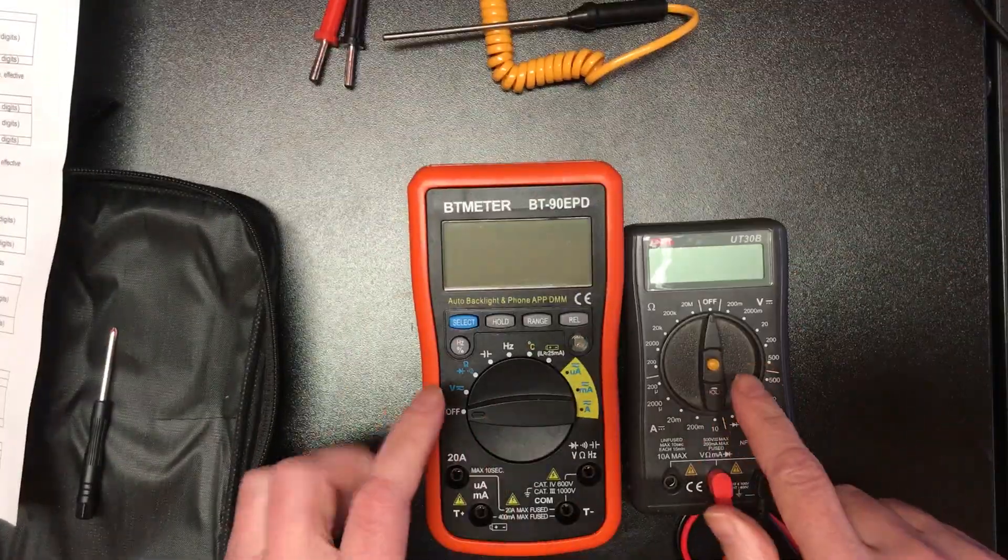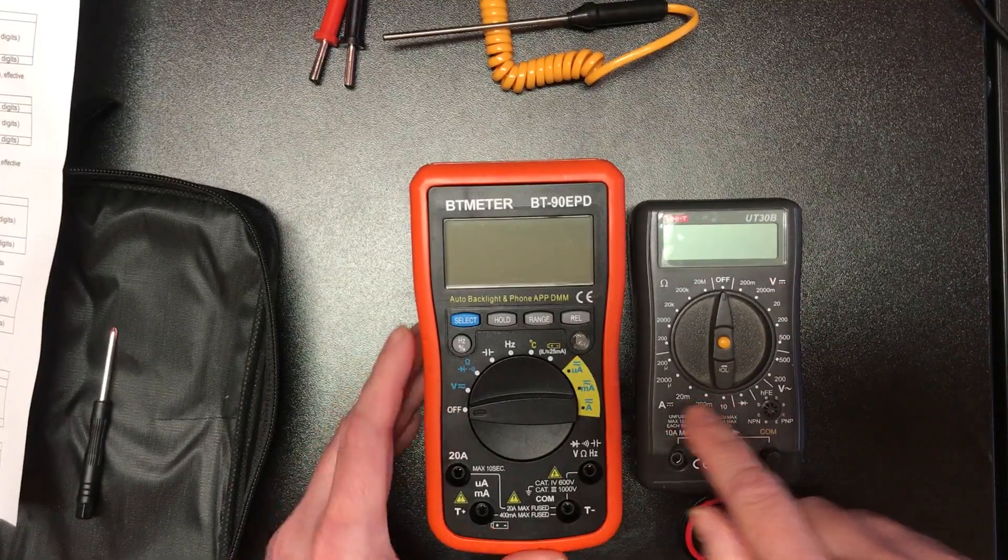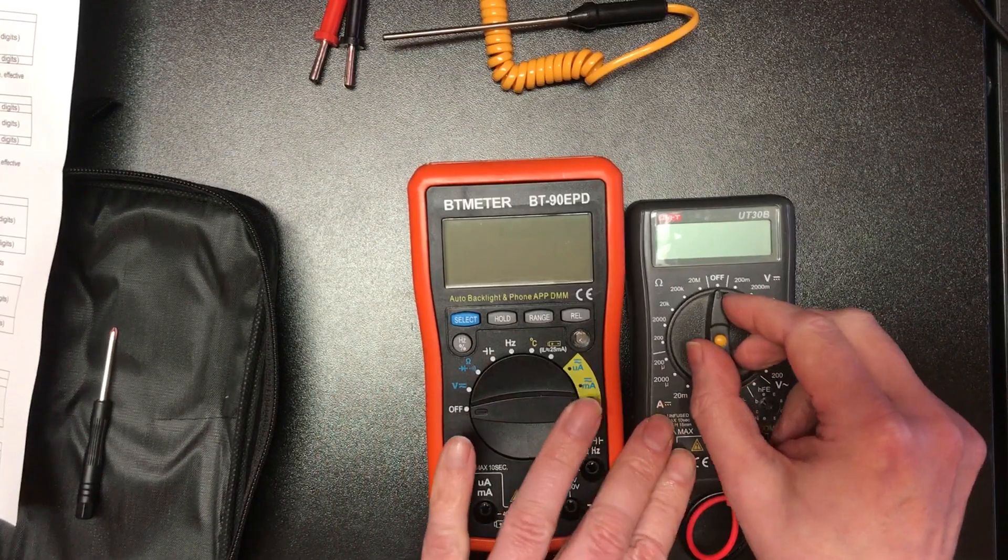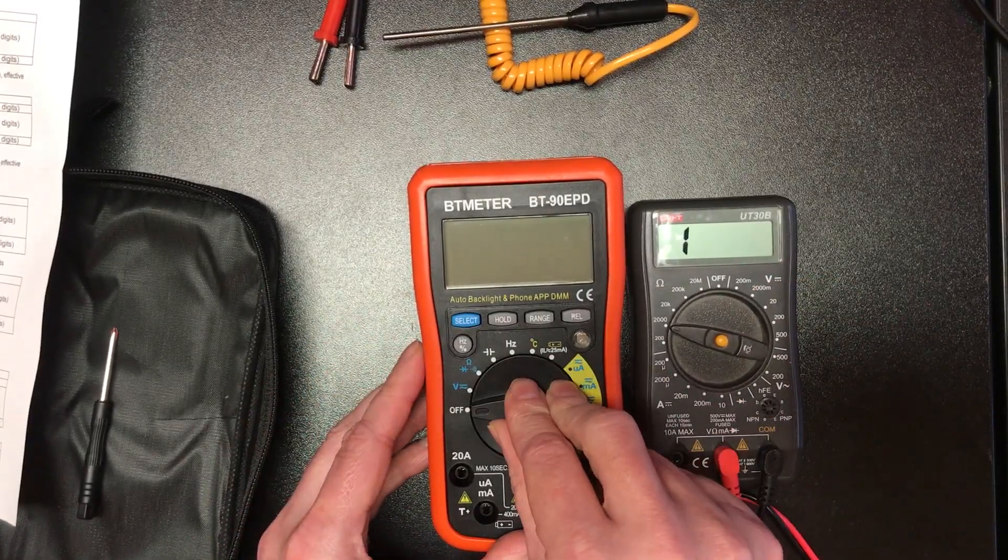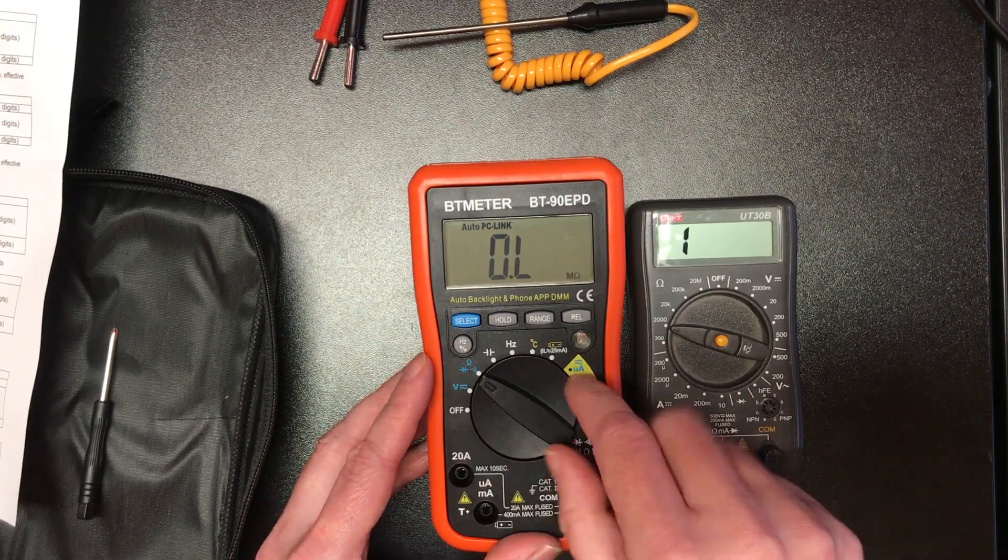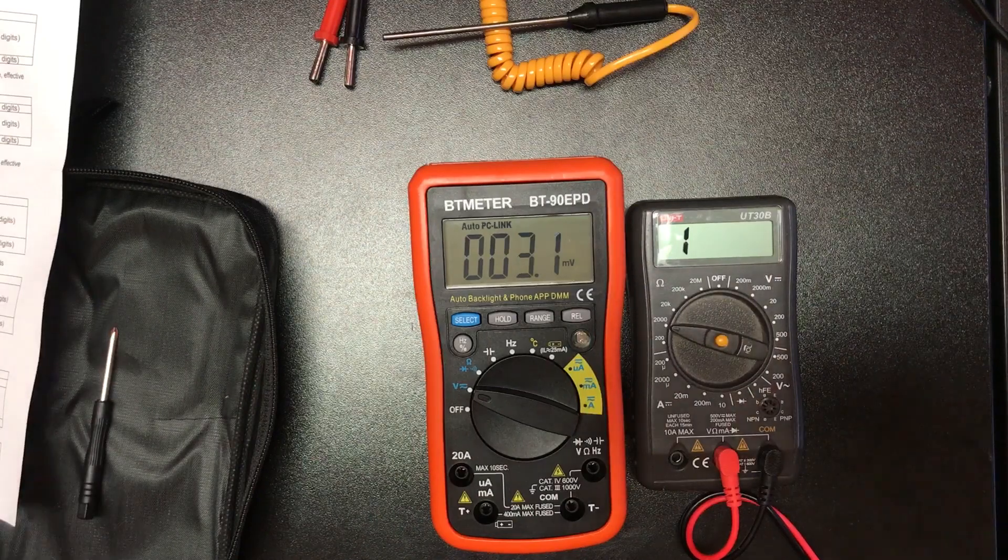So the first big difference from my old multimeter is this is auto-ranging. So on this one I would have to select an appropriate range. Here I should just be able to select, say, voltage and I don't need to worry about the range at all.